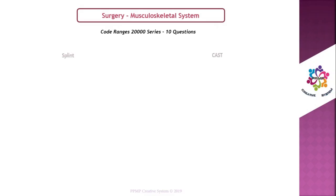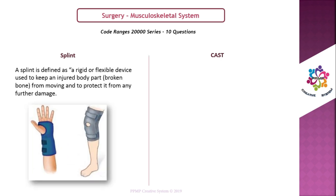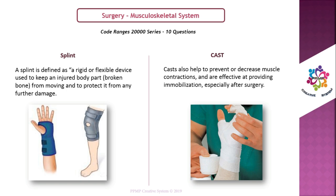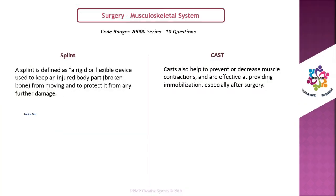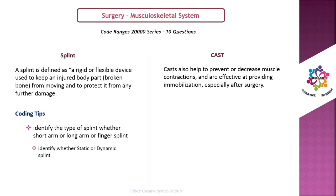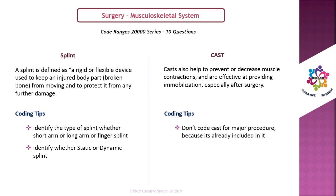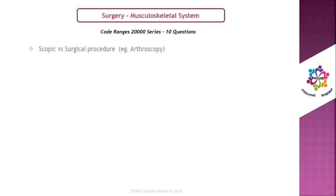Splint and cast: a splint is a rigid or flexible device used to keep an injured body part or broken bone from moving and to protect it from further damage. Casts also help prevent or decrease muscle contractions and are effective at providing immobilization, especially after surgery. For splints there are three types: short arm, long arm, and finger splint — code accordingly. Also code based on static or dynamic splint. For cast: do not code cast for major procedures such as fracture treatment because it is already included; code cast for minor procedures such as treatment for sprain.